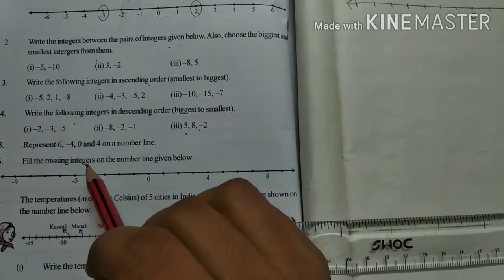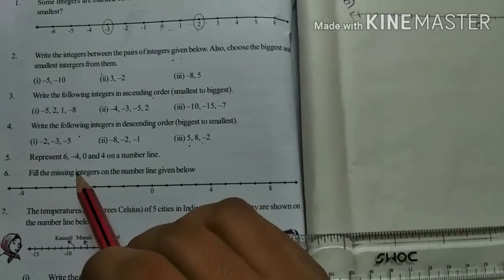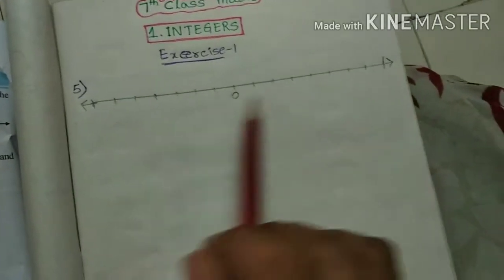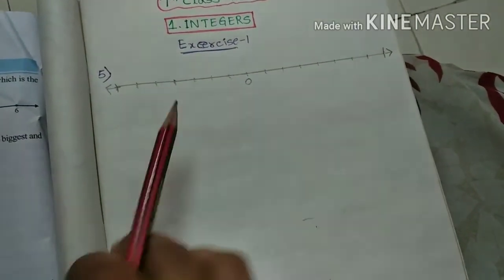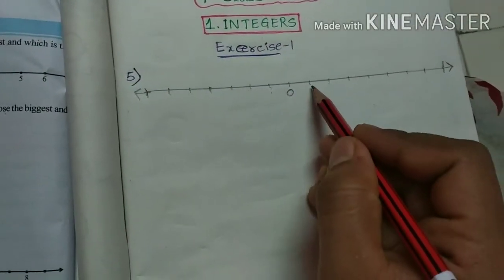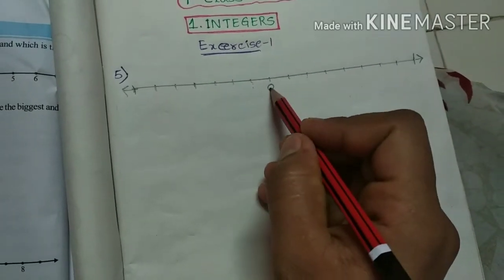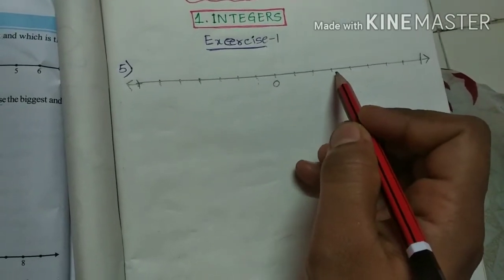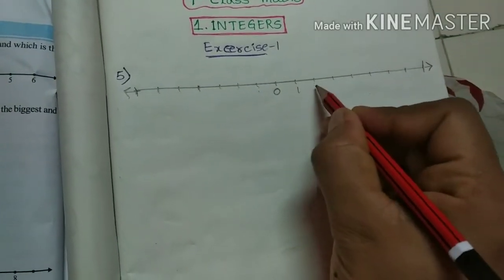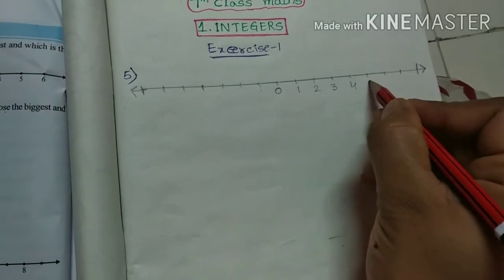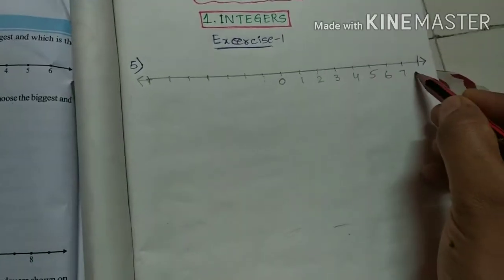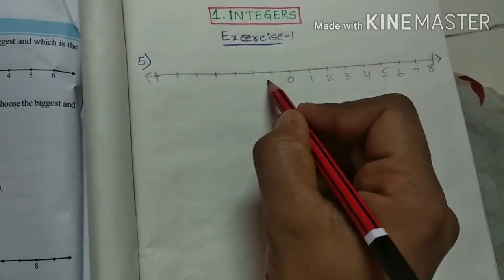We should represent those integers on the number line. So first, take the ruler and pencil, draw a number line. Afterwards, in the middle take zero. Afterwards, on the right side write positive integers, and on the left side write only negative integers. So like this: 1, 2, 3, 4, 5, 6, 7 on the right side.